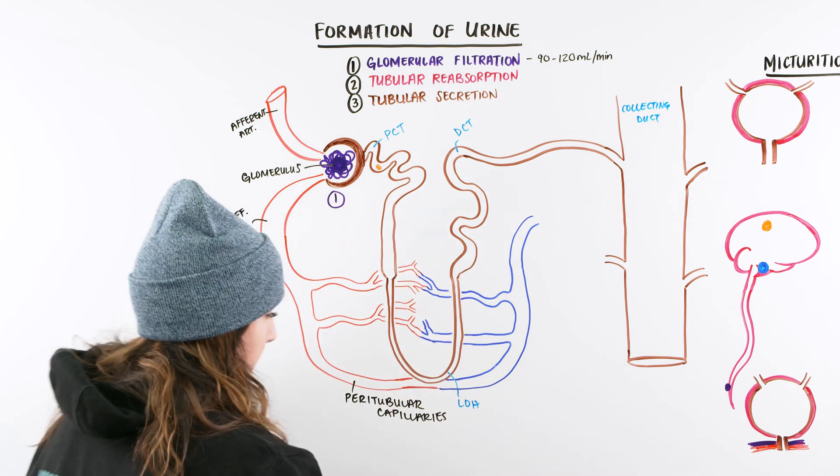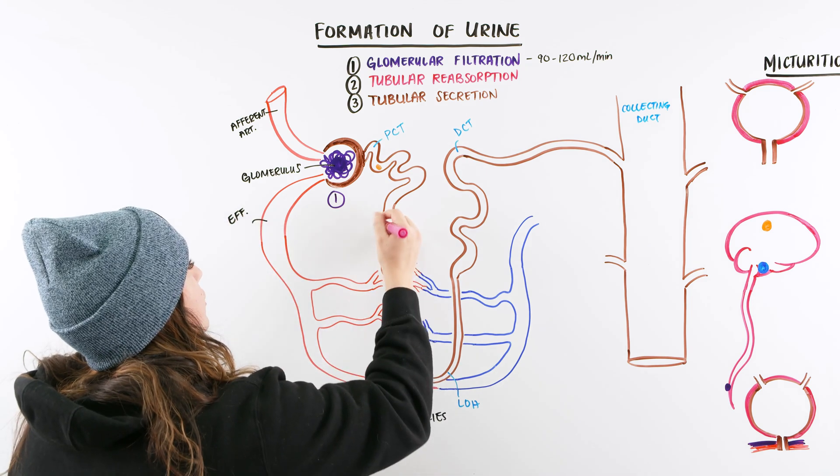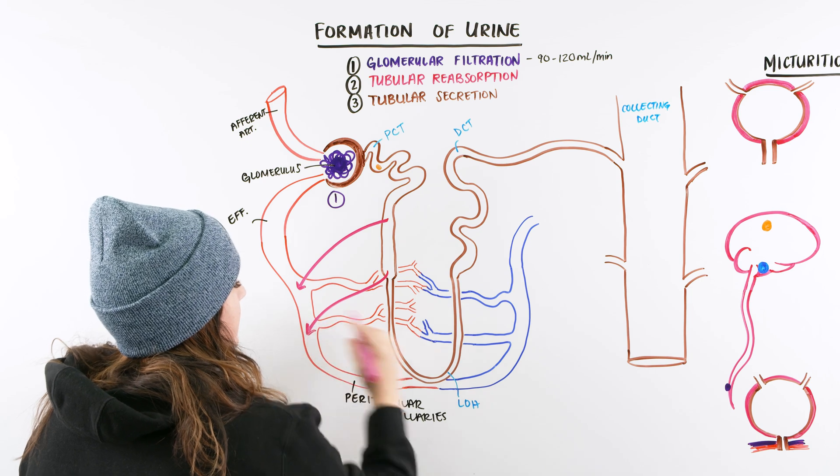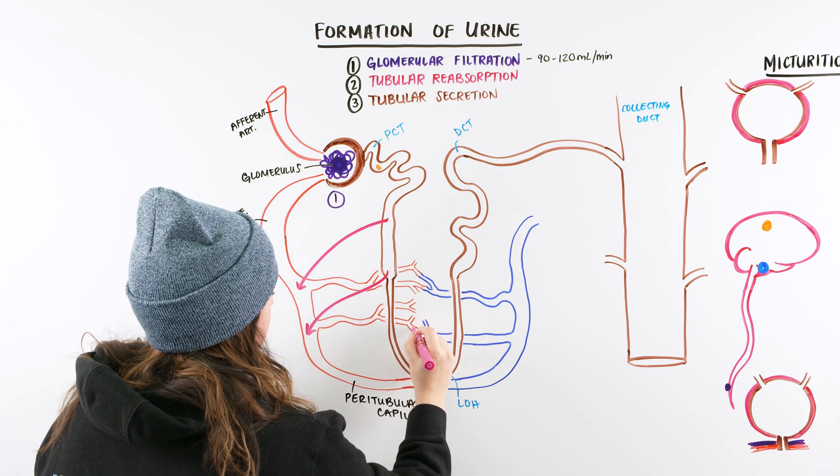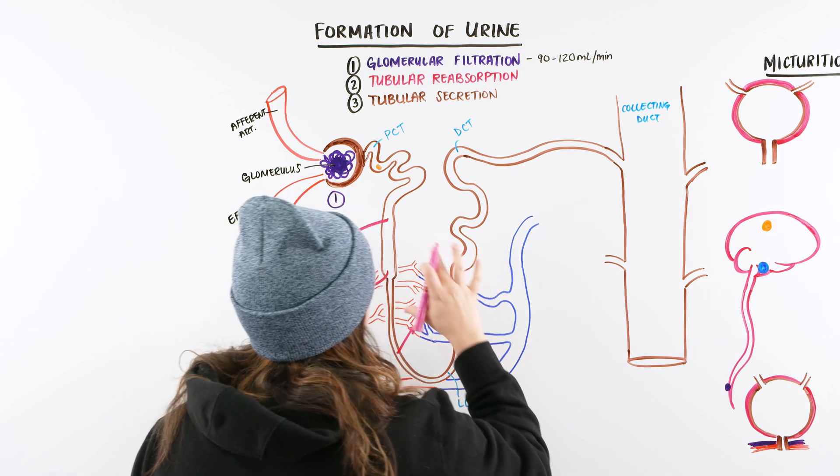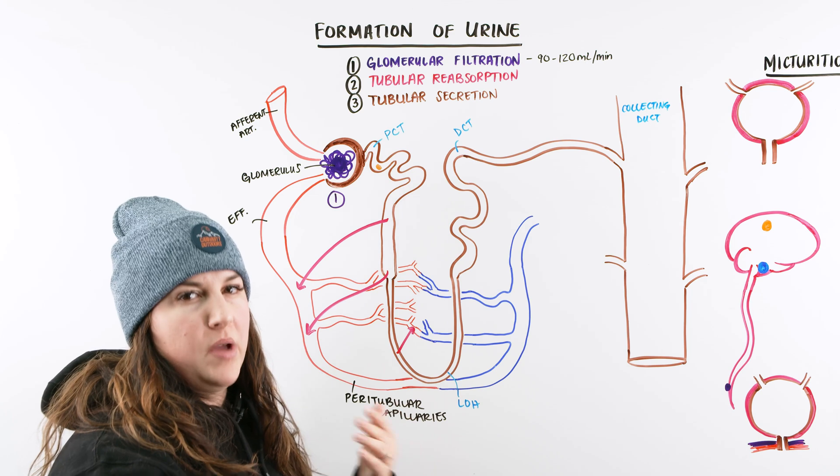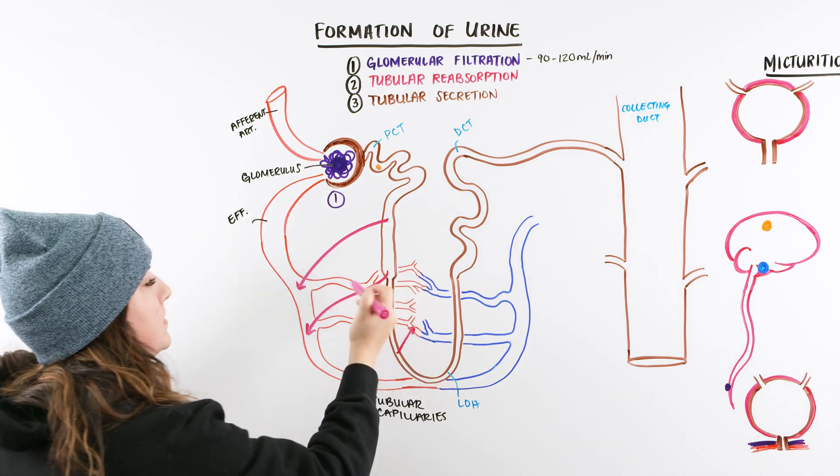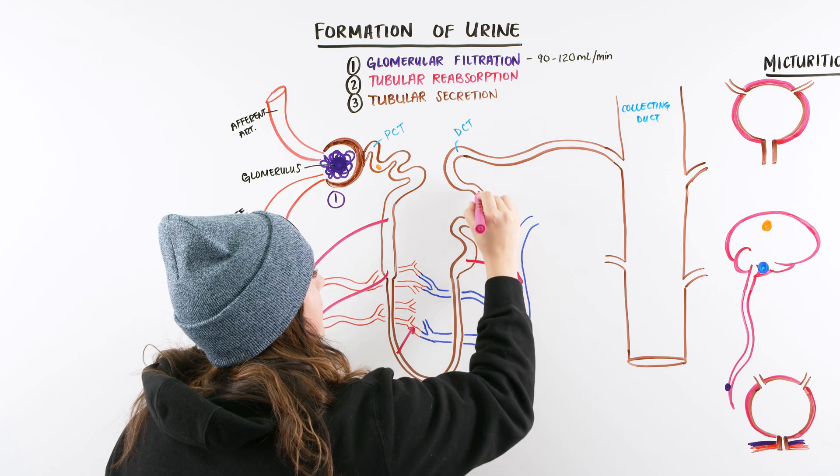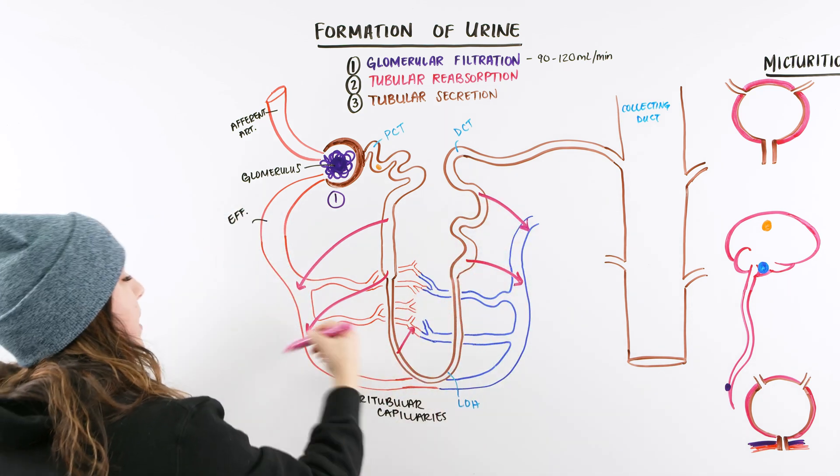So when that occurs, we are having our second step. And you want to think of it as we have concentrations, we have homeostasis within our body. So there's always just checks and balances. And as that filtrate's in here, sometimes our body is like, oh, I actually think I want a little bit more of that back. So I'm going to take it back. It's going to go back into the capillary bed.